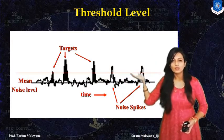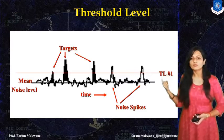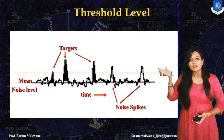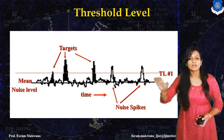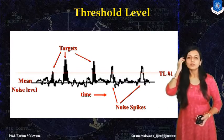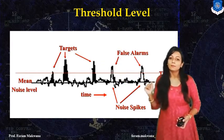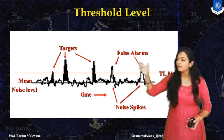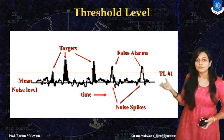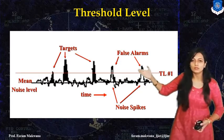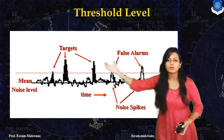If the threshold level is set at this level, we have defined two thresholds — threshold 1 and threshold 2. If a spike has a value greater than the threshold level, then we can say a target is present, otherwise not. Here it is presented for two thresholds. With threshold 1, you can count 1, 2, 3, 4, and 5 — five targets appear to be detected. But two of these are not actual targets.